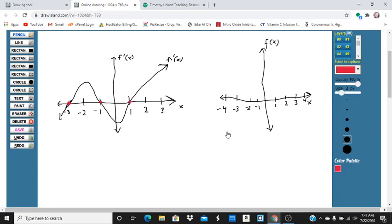We also want to note that below negative 3, the slope is negative. So the slope of f of x will be negative. Between negative 3 and negative 1, the slope will be positive. Remember, the first derivative is the slope of the tangent line. Between negative 1 and 1, the slope is negative. And then above 1 is positive.